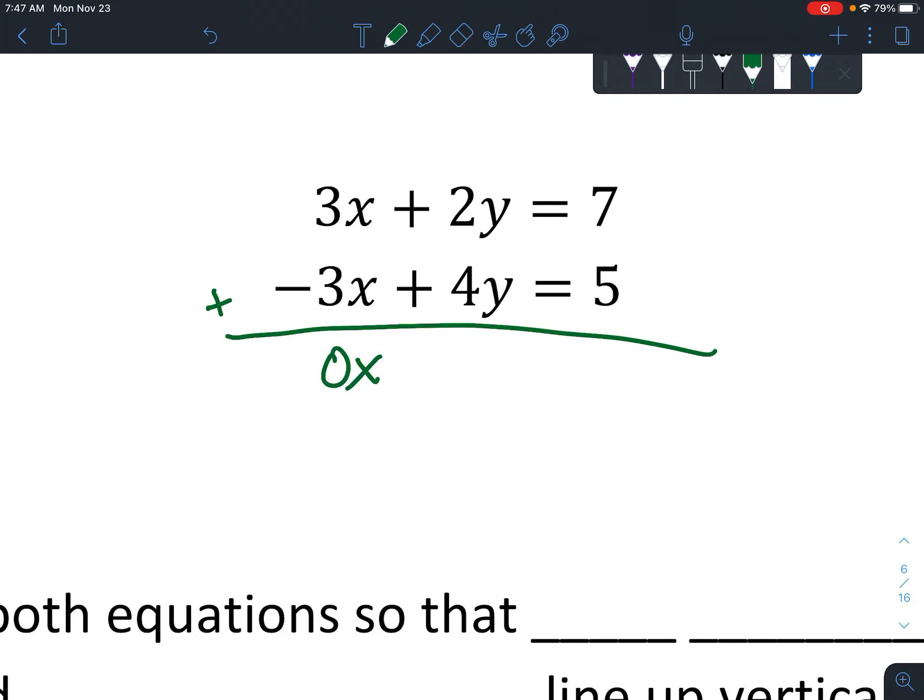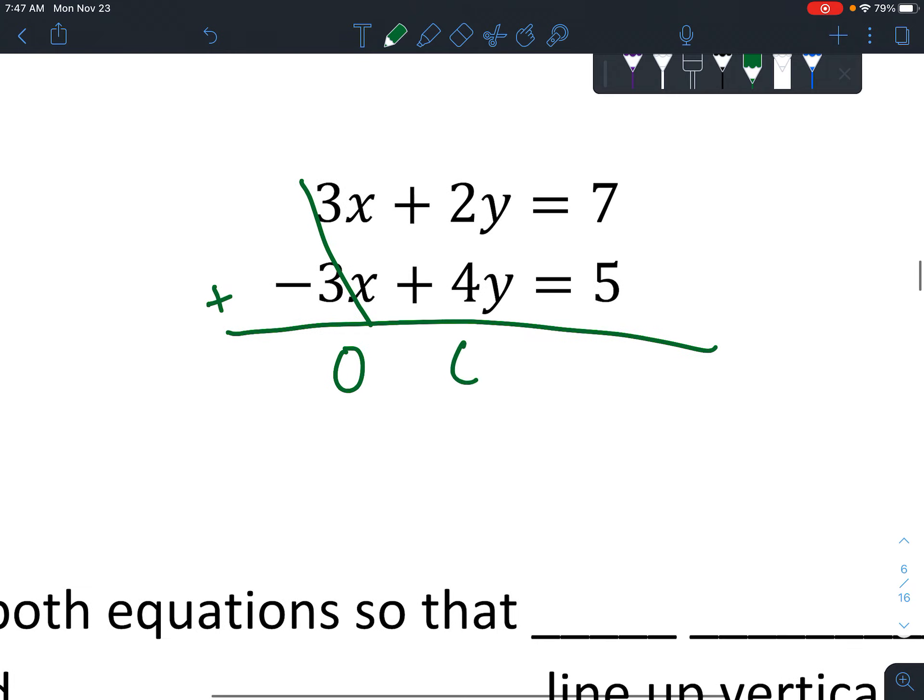So negative 3x plus 3x is going to be 0x, which is really just 0, right? So as soon as you get that, you can even cross those out. Let's say 0. And then 2y plus 4y, you've got 2 y's, 4 more y's, you have 6 y's all together. And it's positive. 7 plus 5 is 12.